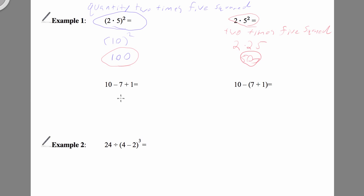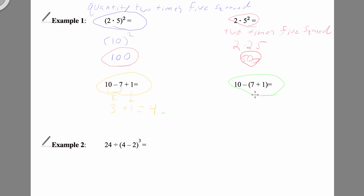For the other example, 10 − (7 + 1): PEMDAS says do parentheses first. So the 7 plus 1 is 8. Then 10 minus 8 is 2. Notice the difference — grouping with parentheses completely changes the answer.